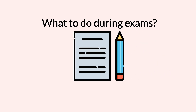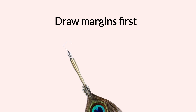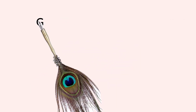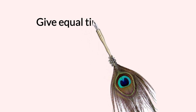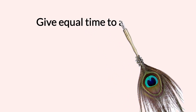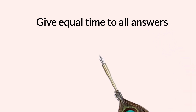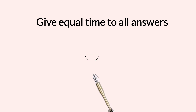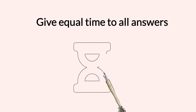What to do during exams? In the exam hall, you will get the answer sheet first. It is important to draw margins so that it is easier to write the answers point-wise. You will get 180 minutes for 100 marks — divide time equally. Give 1.8 minutes for each mark: solve a 10 marks question in maximum 18 minutes, a 15 marks question in maximum 27 minutes, and a 25 marks question in maximum 45 minutes.